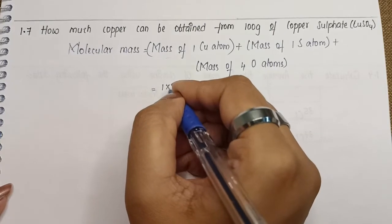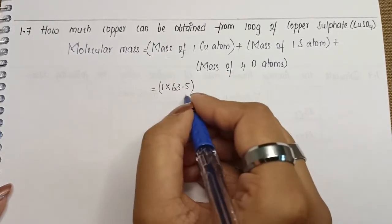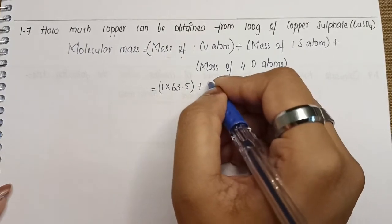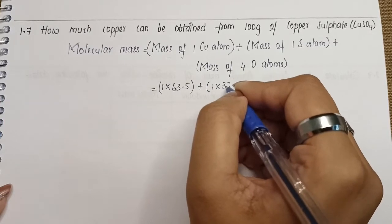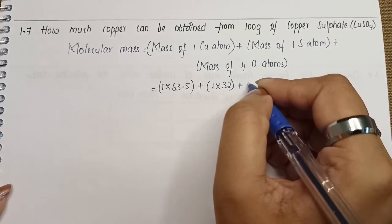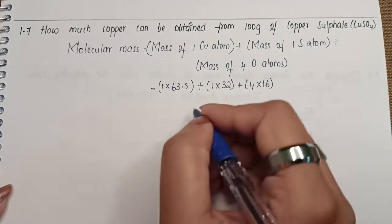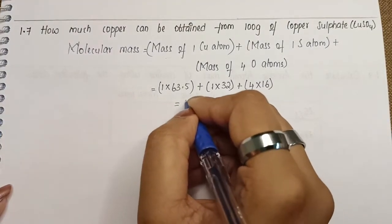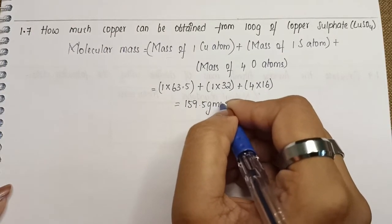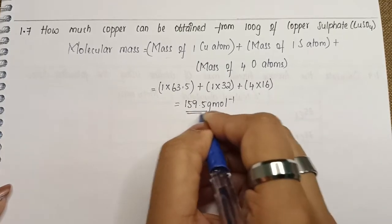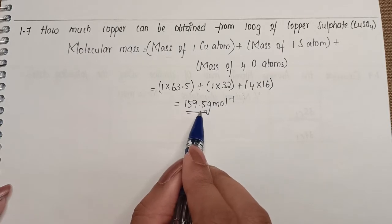Now we need to substitute the values here. We have only one copper atom, so 1 times 63.5, which is the atomic mass of copper, plus mass of one sulphur atom, so 1 times 32, plus four oxygen atoms times the mass of oxygen. When we calculate this, your mass is going to be 159.5 gram per mole.